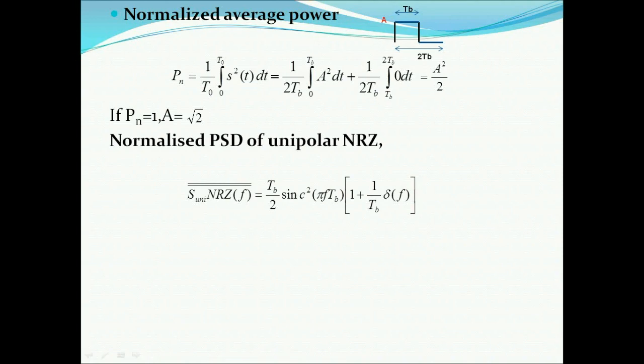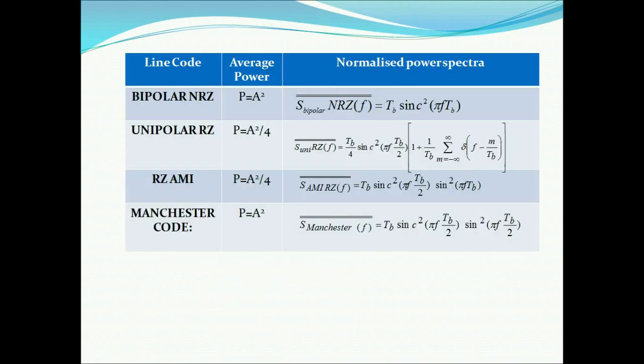The graph shows the power spectra of unipolar NRZ. Following the same procedure, we can find the power spectra for bipolar NRZ, unipolar RZ, RZ AMI, and Manchester code, with values given in the table.